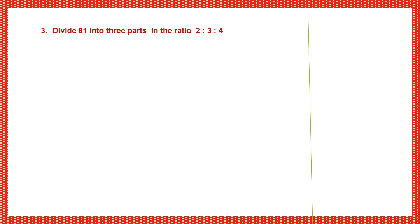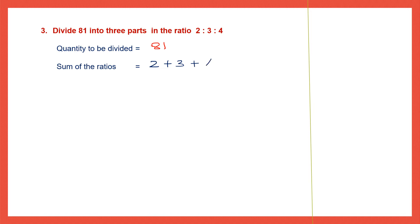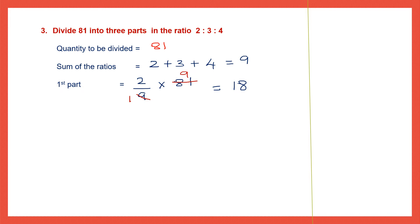Question 3. Divide 81 into 3 parts in the ratio 2 is to 3 is to 4. The quantity to be divided is 81. The sum of the ratios: 2 plus 3 plus 4 — 2 plus 3 is 5, and 5 plus 4 is 9. To find the first part, take the first term 2, divided by the sum of the ratios 9, multiplied by 81. Cancel: 9 ones are 9, and 9 nines are 81. Multiply: 9 twos are 18. The first part is 18.